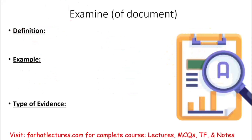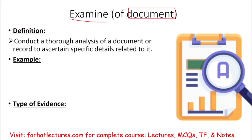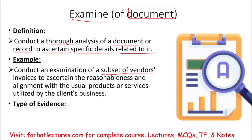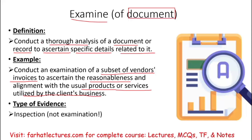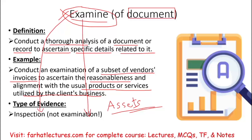Starting with examine: when we say examine, you are examining a document. The definition is to conduct a thorough analysis of a document or record to ascertain specific details related to it. An example would be to conduct an examination of a subset of vendors' invoices to make sure of the reasonableness and alignment with the usual products or services utilized by the client. The type of evidence supported here is inspection — not examination — because we are dealing with documents. Remember, examination deals with tangible assets we can see and touch.